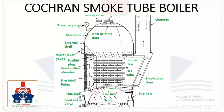Here refractory material is fitted on the combustion chamber — on this side of the combustion chamber, and on the floor and sides of the furnace — to safeguard the boiler shell from overheating.